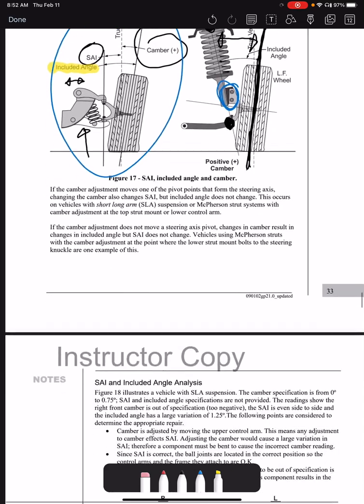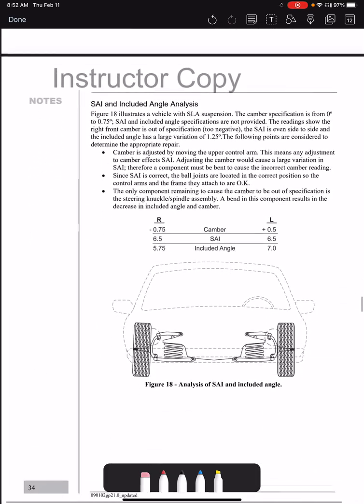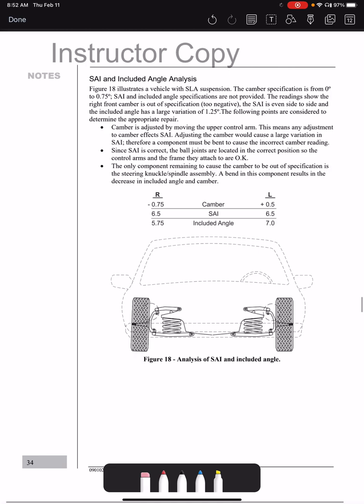So with that information, we should be able to look at some specifications and determine what's going on inside this vehicle. So in a case like this, we have an SLA suspension, the short long arm suspension. And remember, with a short long arm suspension, the included angle should always remain the same.